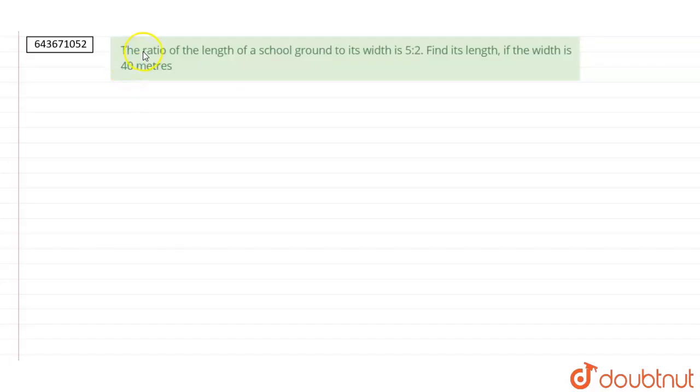The question is, the ratio of the length of a school ground to its width is 5 is to 2. Find its length if the width is 40 meters.